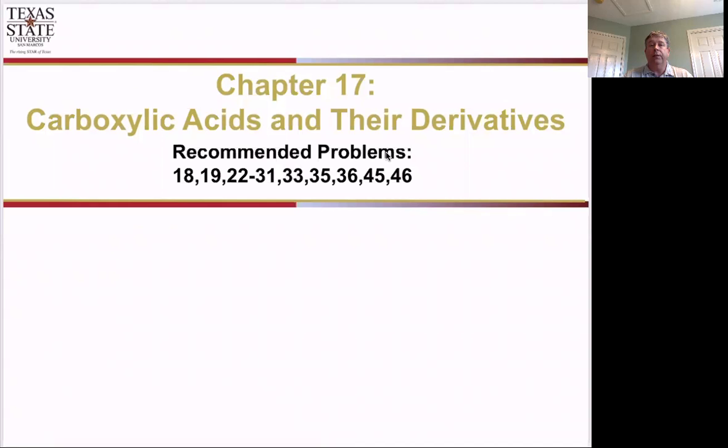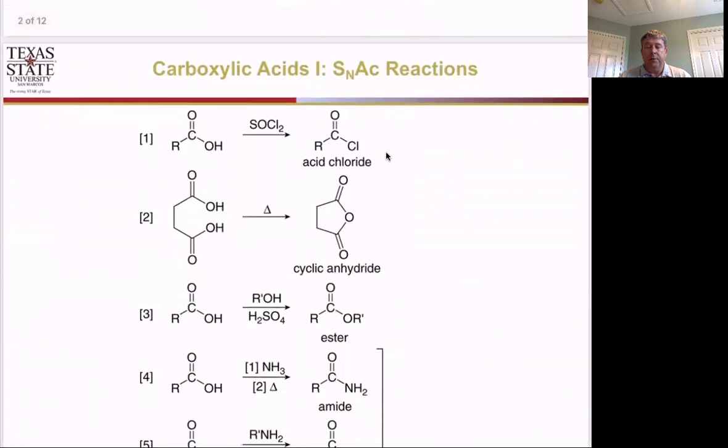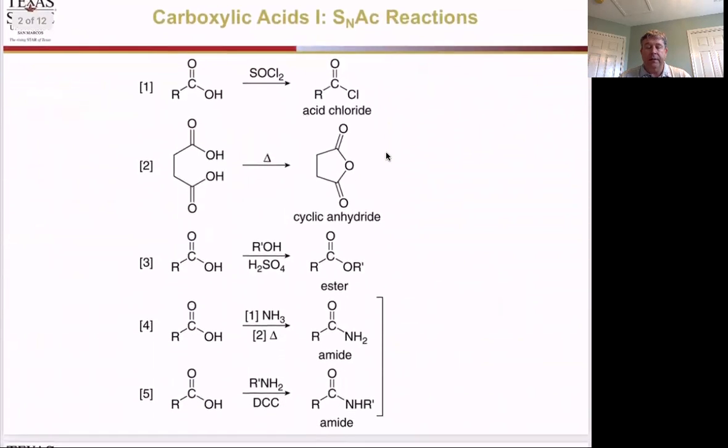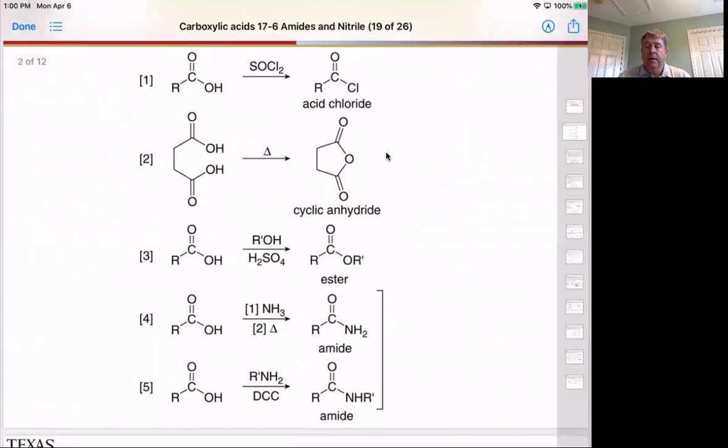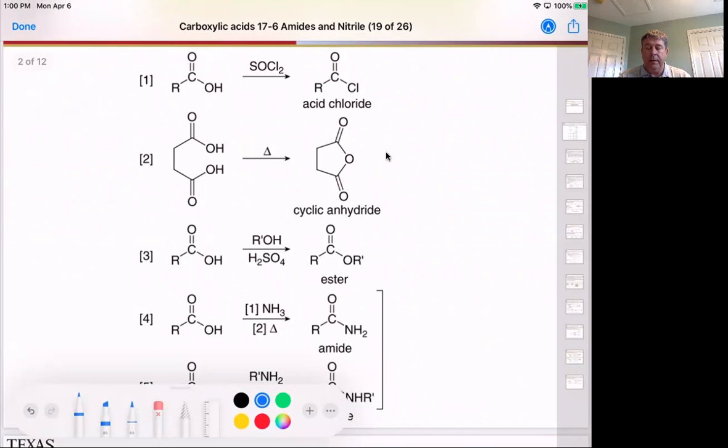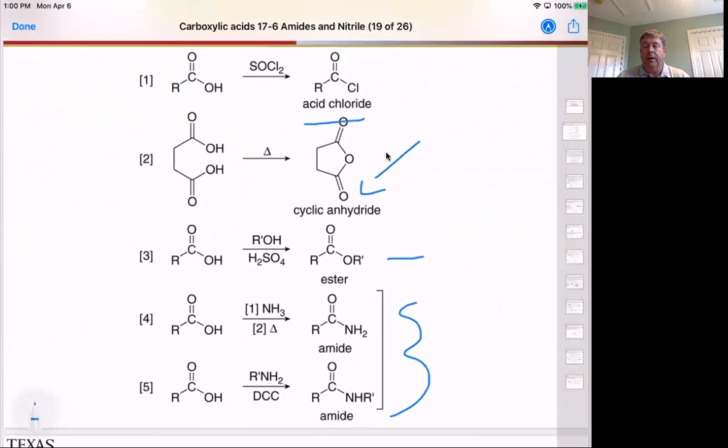Hello, Chemistry 2342. This is the end of chapter 17, amides and nitriles. As we've been going down the reactivity series of the carboxylic acids, we started with acid chlorides being the most reactive, going down to anhydrides, esters, and now we're going to look at the amides and the nitriles, which are a version of the amides here.